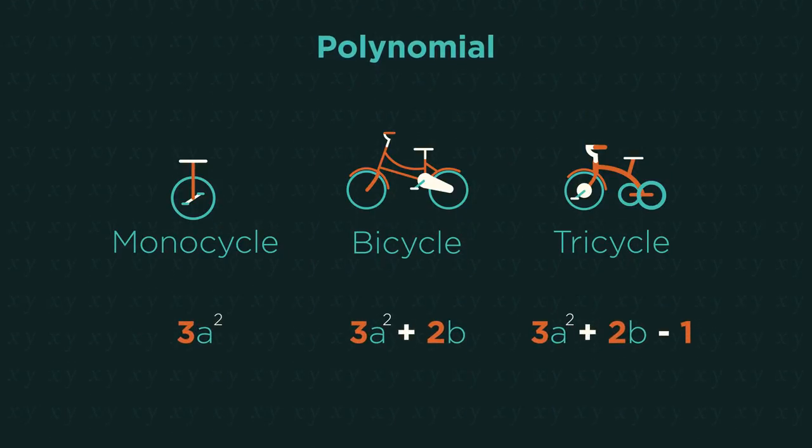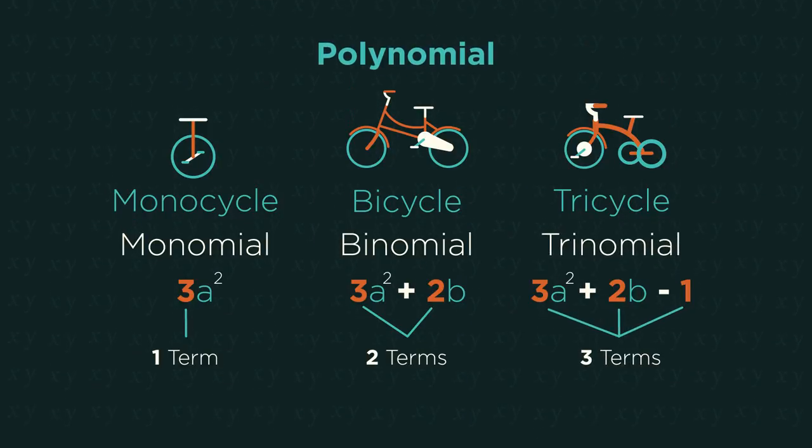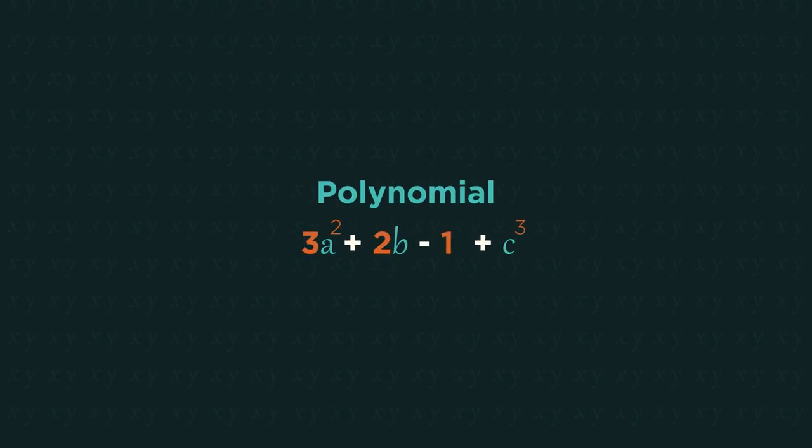I'm sure you guessed it. A monomial has one term, a binomial has two terms, and a trinomial has three terms. More than three terms, we just call a polynomial.